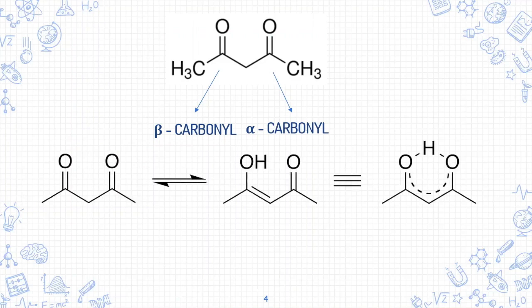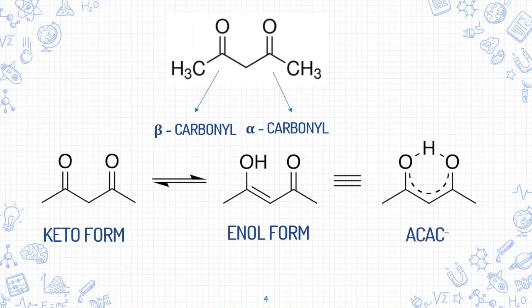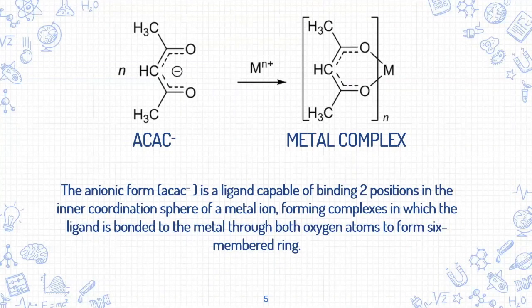The molecule acetylacetone exists in two forms: the ketone form and the enol form. The enol form is a weak acid, and after removal of a proton, it exists as the conjugate base acetylacetonate. The anionic form is a ligand capable of binding two positions in the inner coordination sphere of a metal ion, forming complexes in which the ligand is bonded to the metal through both oxygen atoms to form a six-membered ring.